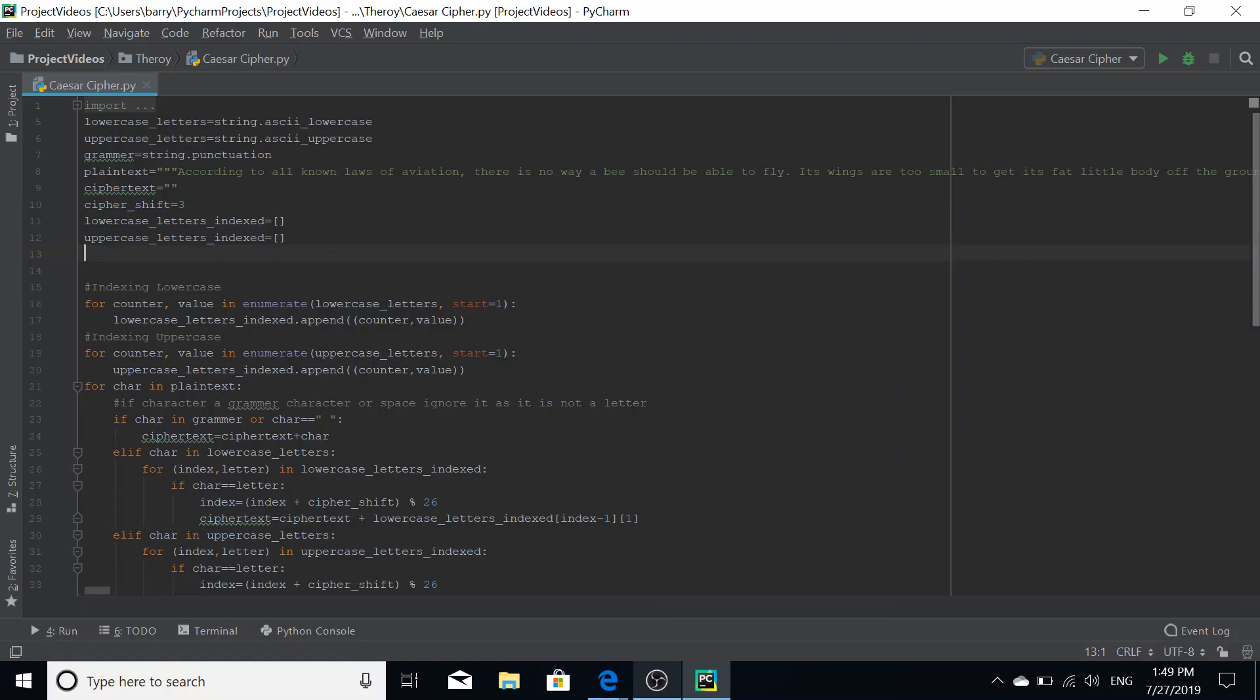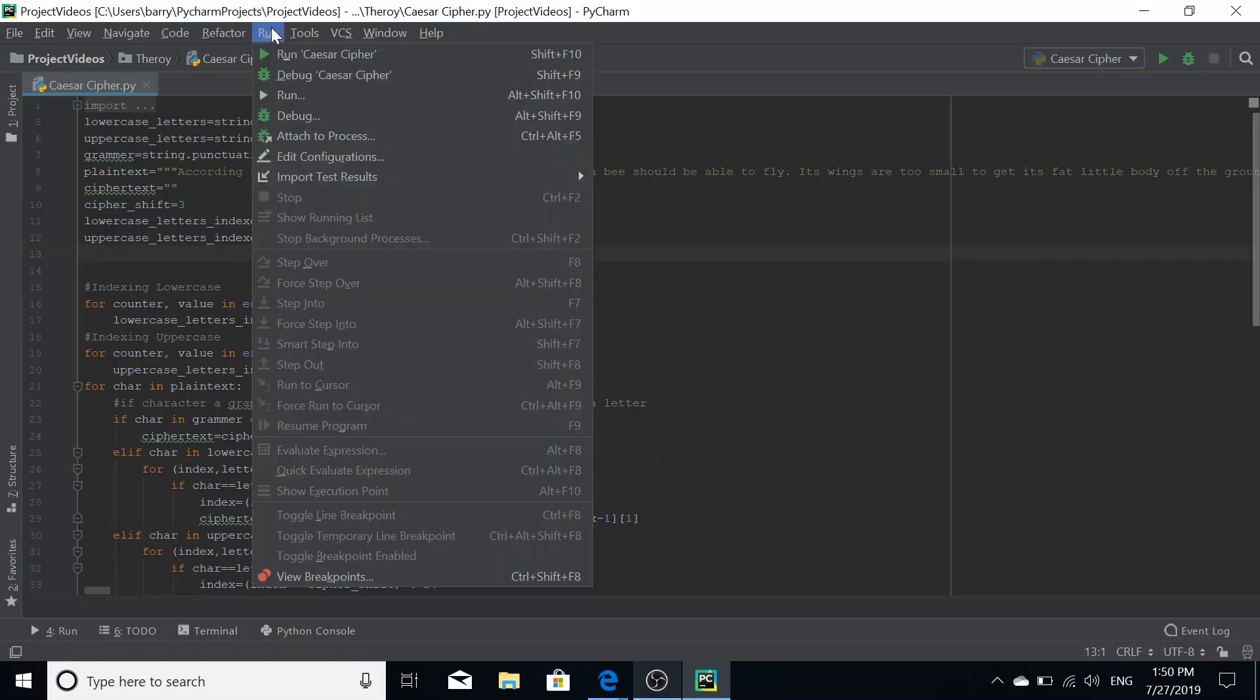What this script is going to do is convert the plain text into cipher text by a shift of three. And then the script is going to parse through the cipher text and it's going to essentially count each letter and then produce a graph of frequency for the letters. So if we run this now,